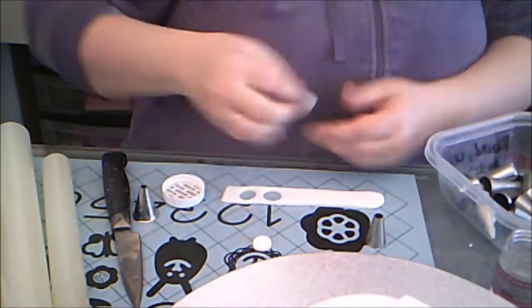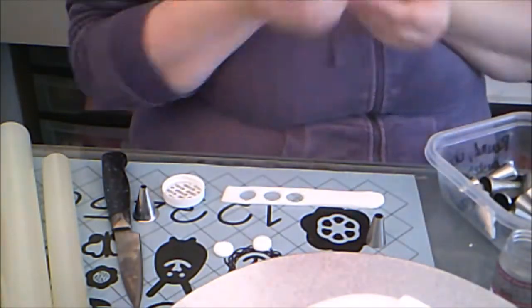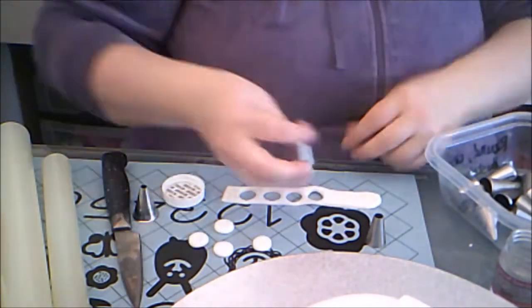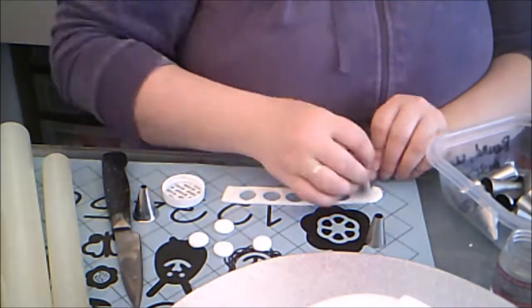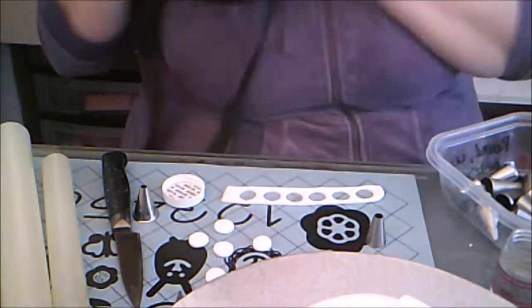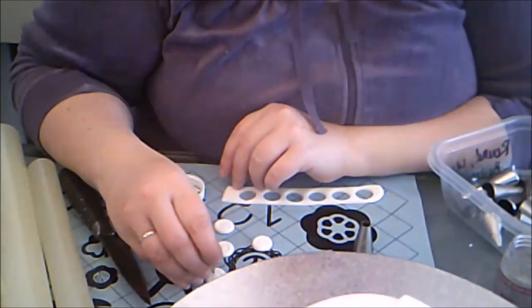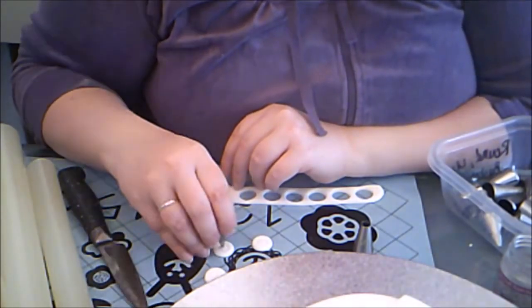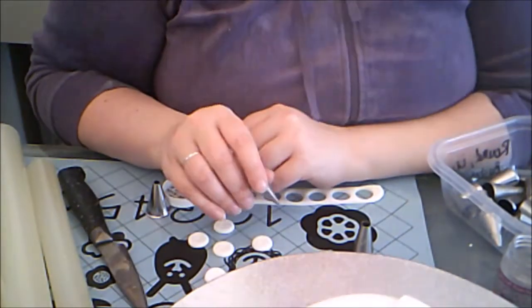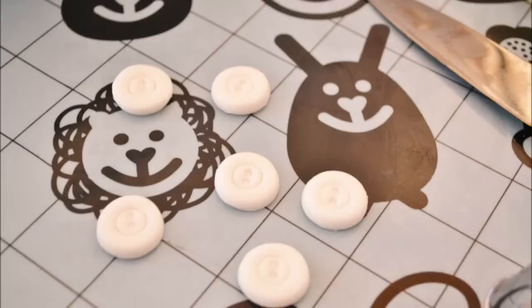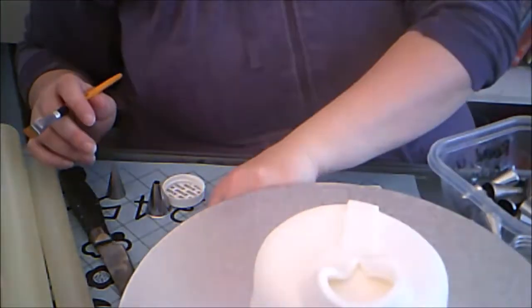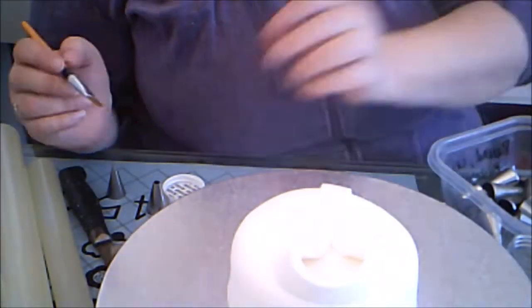Then I used some round piping tips to create some buttons out of white fondant. I cut out some round circles out of white fondant, and pressed a circle into it using a large round piping tip and some buttonholes with a small round piping tip. Then I placed the buttons onto the strip.